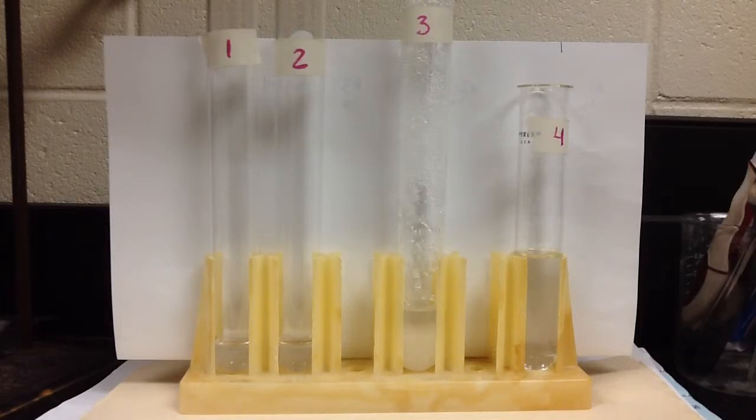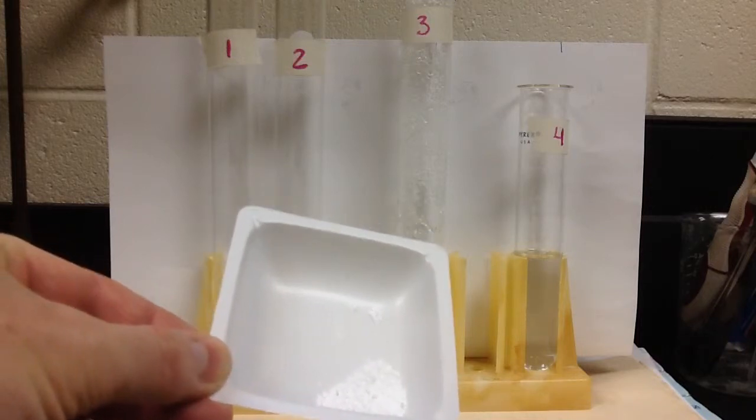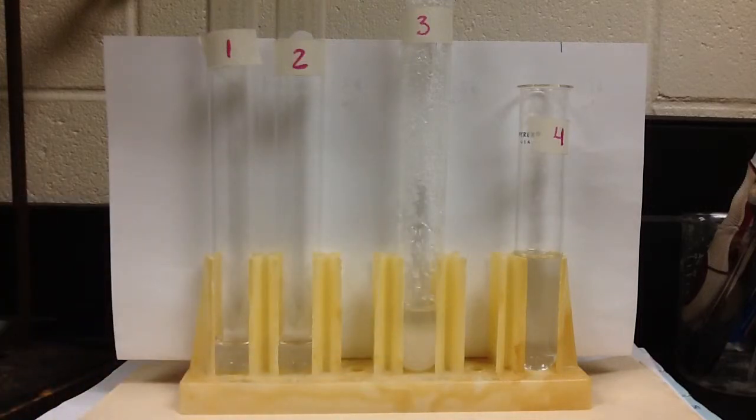So in test tube number one, we've got five milliliters of water, and what we did is we added 0.5 grams of sodium acetate to it. Sodium acetate is just a white chemical, the powder there, and we added 0.5 grams into test tube number one, and we shook it, and after shaking a little while, everything dissolved.